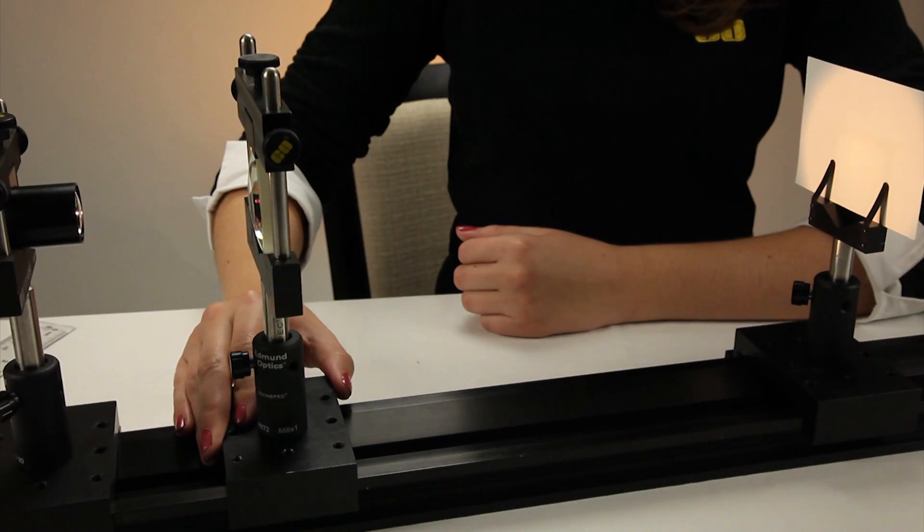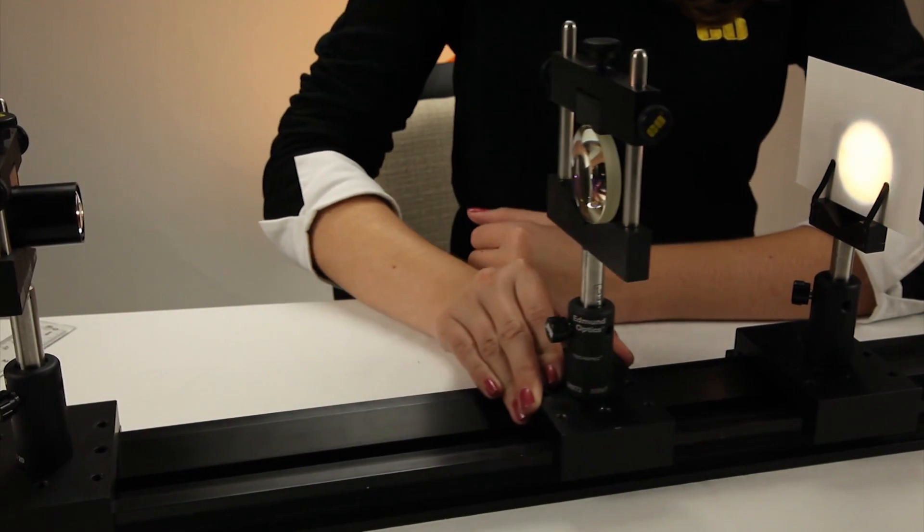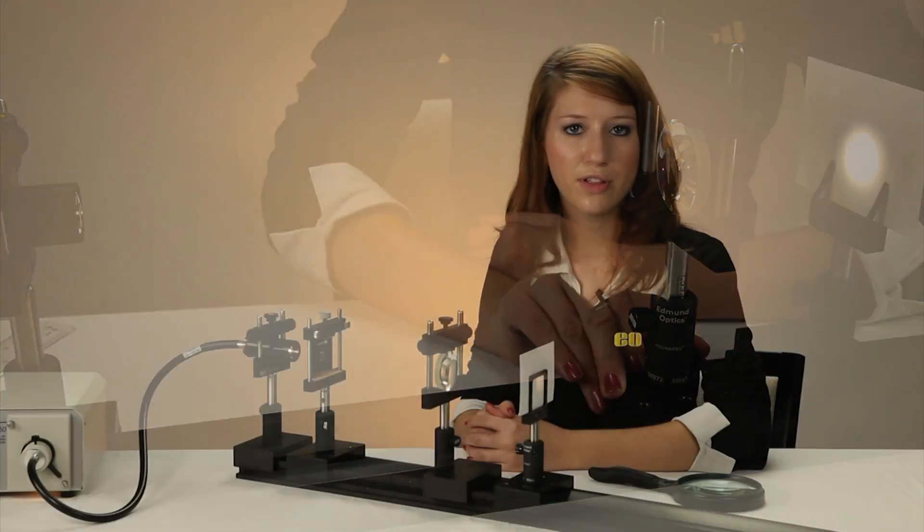If you want to focus your object down to be smaller with a magnification less than one, the lens must be closer to your image than the object, since the object distance must be greater than the image distance.